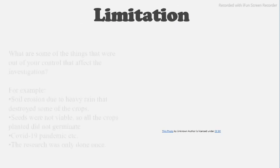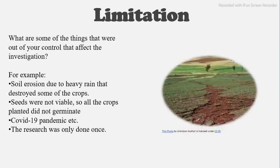Then you are going to look at your limitations — what are some of the things that were out of your control that affected the investigation. For example, soil erosion took place due to heavy rain that destroyed some of your crops, or seeds were not viable so all the seeds planted did not germinate, or the COVID-19 pandemic affected the sourcing of seeds or cultivation of your crop, or the research was only done once so the results might not be reliable or valid.